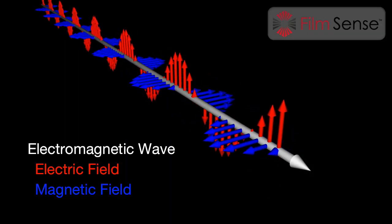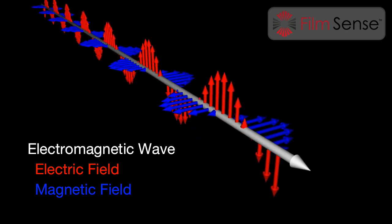Light is an electromagnetic wave. This visualization shows a beam of light propagating towards you. The electric field, shown as red vectors, oscillates perpendicular to the light beam direction. The magnetic field, shown as blue vectors, oscillates perpendicular to both the light beam direction and the electric field.